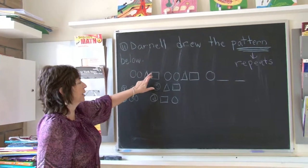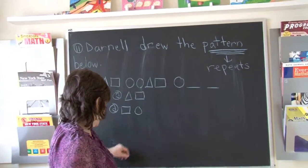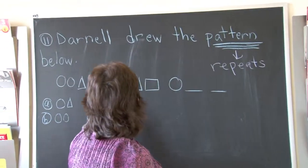We have circle, circle, triangle, square. Circle, circle, triangle, square. This is where it began to repeat itself.